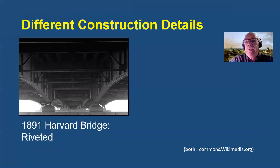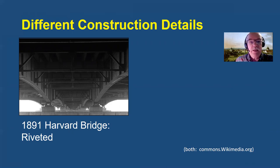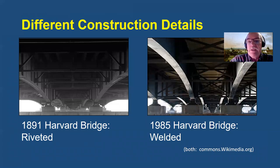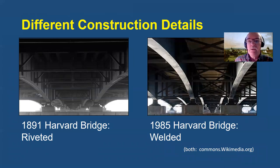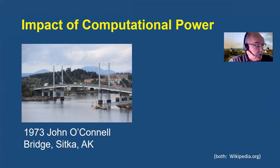Within a particular classification of main span type, artificial intelligence may be able to date the bridge from different construction details. For example, this is the 1891 Harvard Bridge in Boston across the Charles River — one end is at MIT. These variable depth plate girders are riveted together. The bridge was replaced in the 1980s and although the variable depth plate girders were maintained, they're now welded, not riveted together.